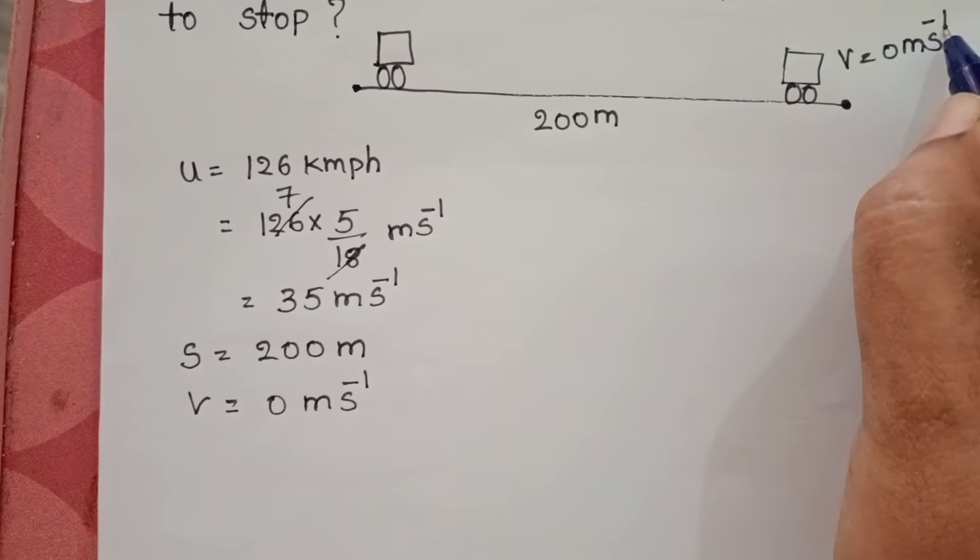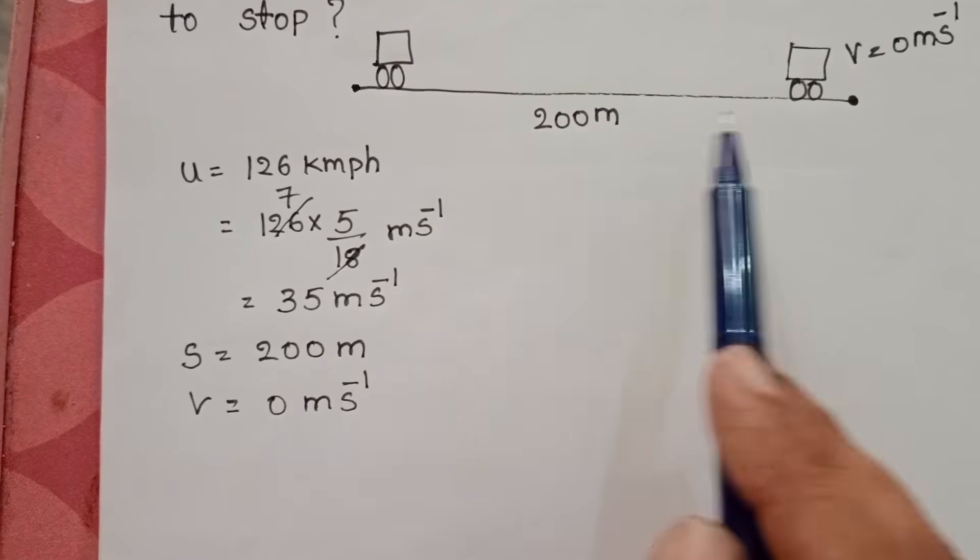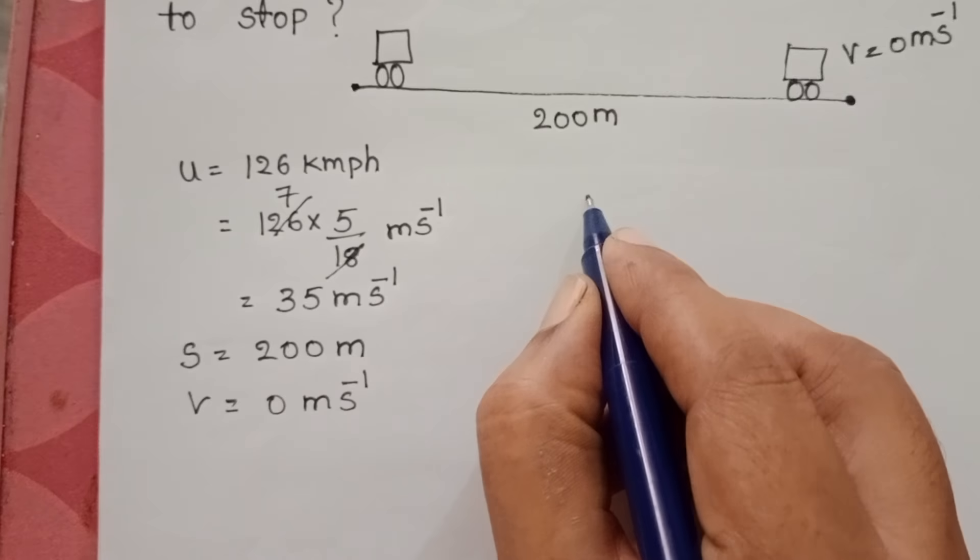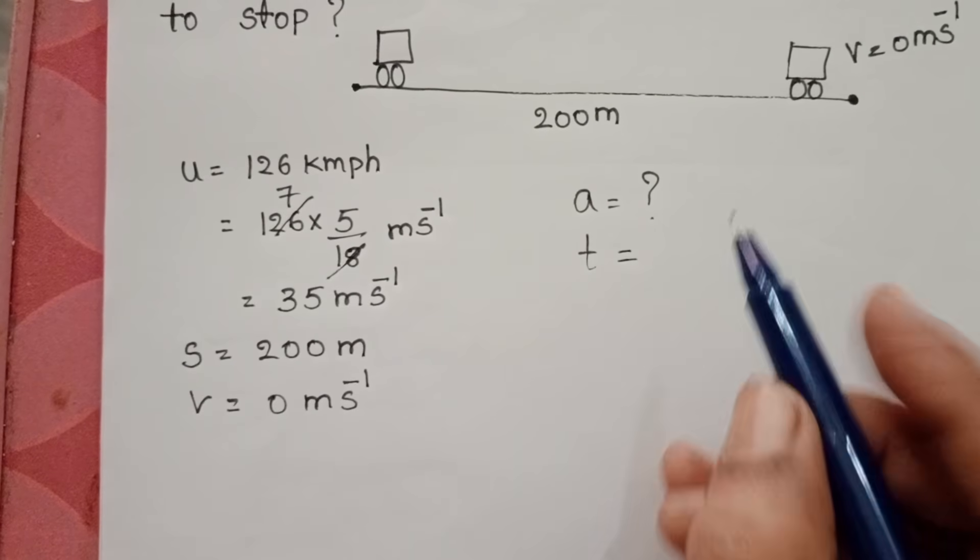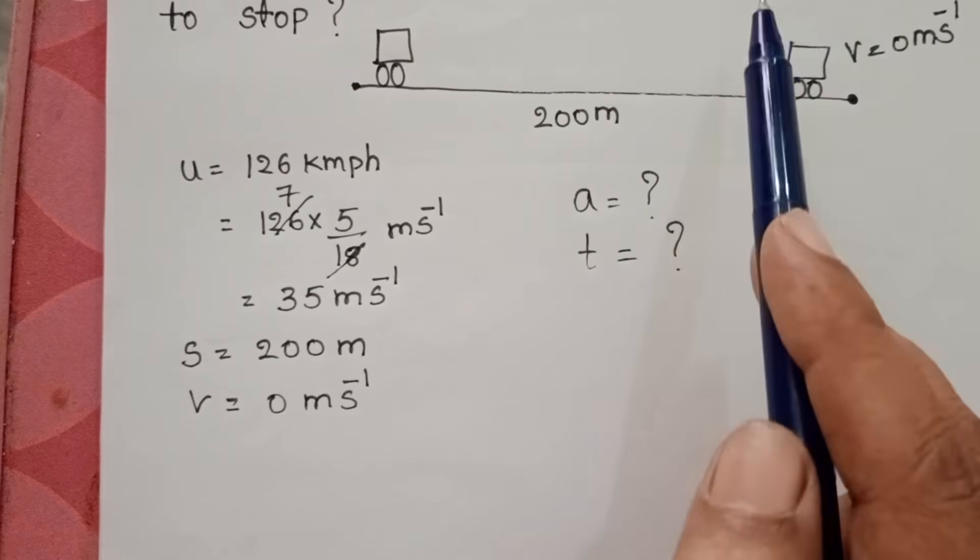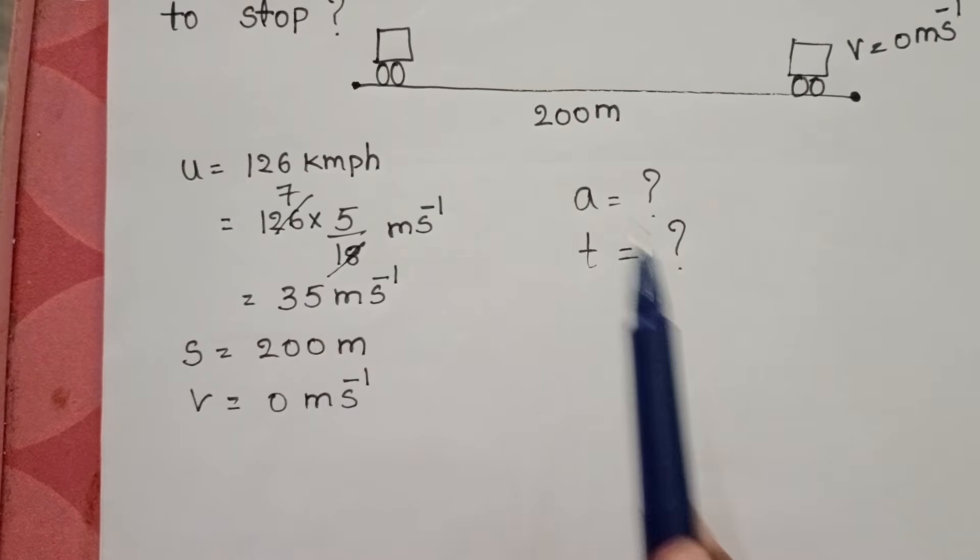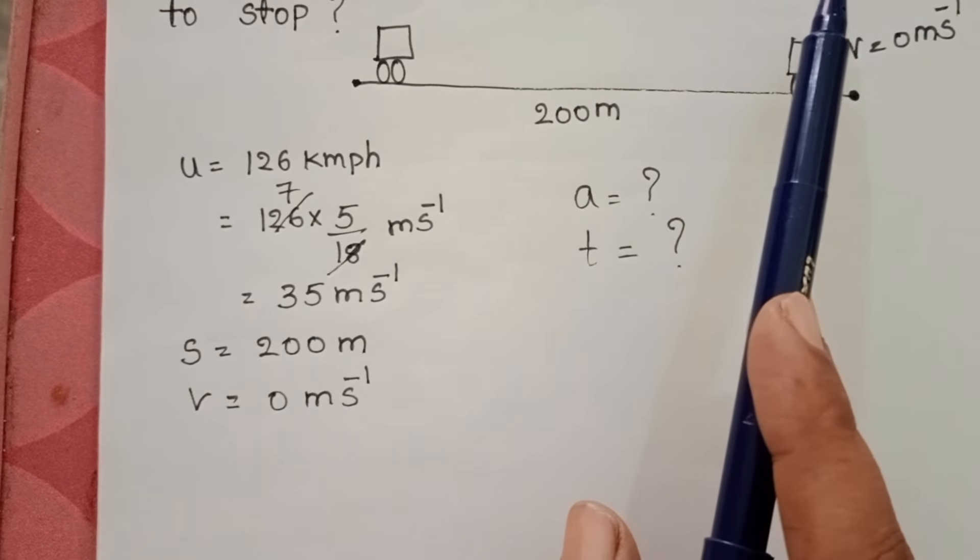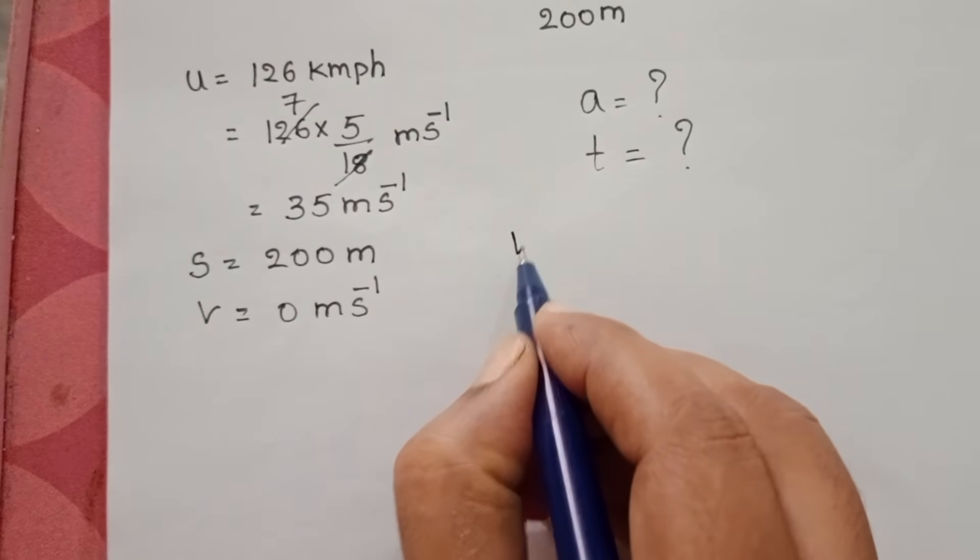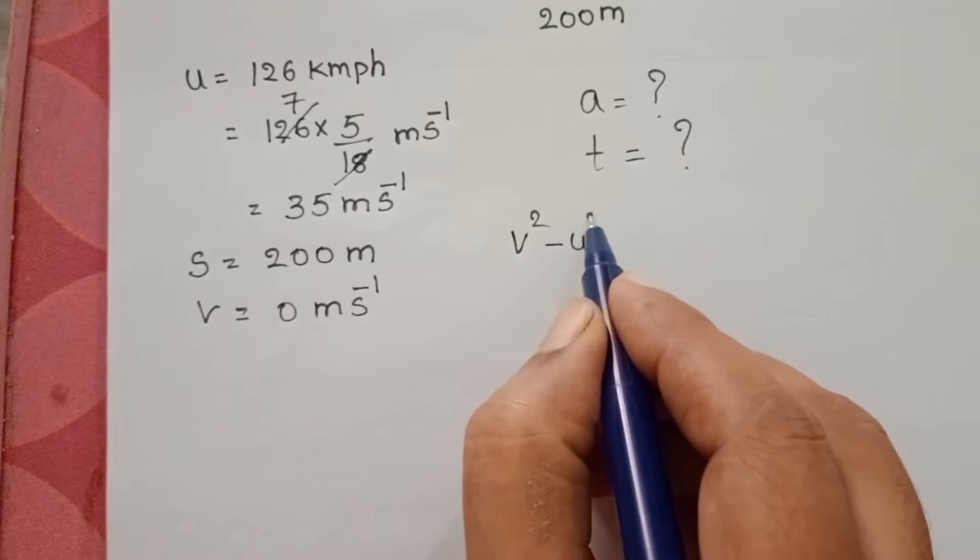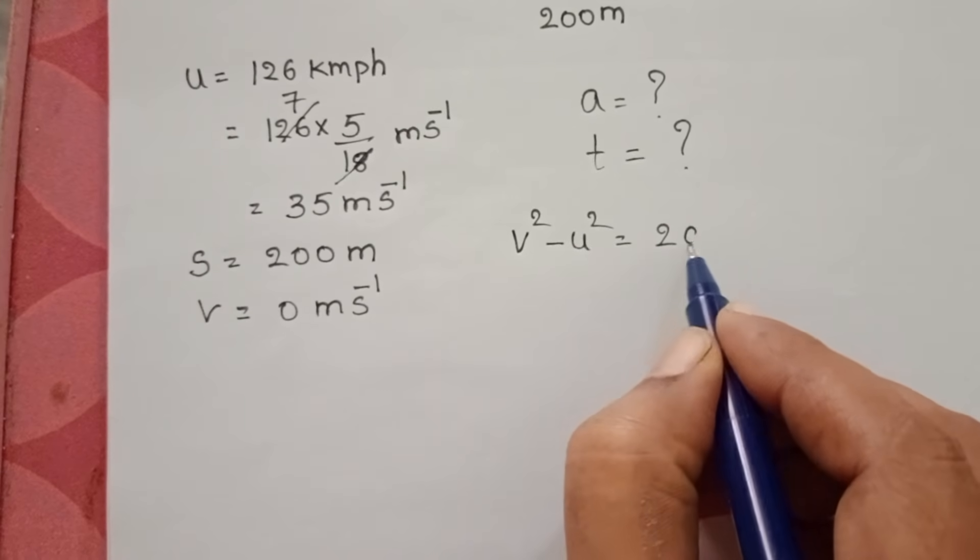Here we have to find out the retardation of the car, and also how long does it take for the car to stop. Given assumption is the car is moving with uniform motion, so take the equations of motion: v squared minus u squared equals 2AS.